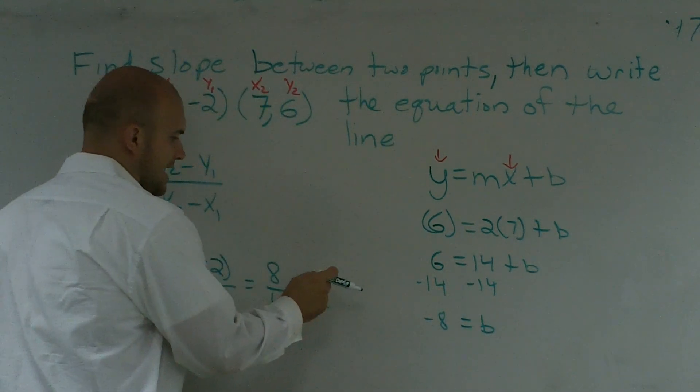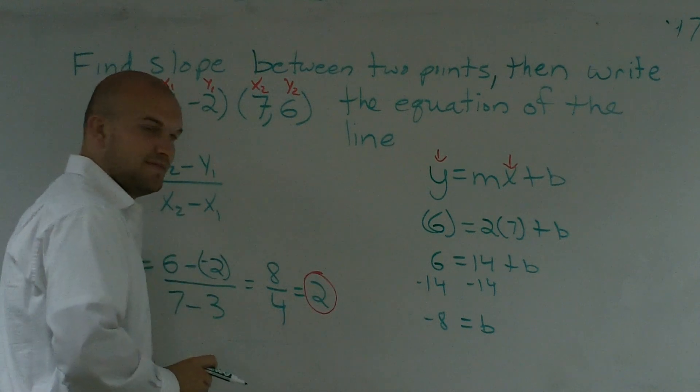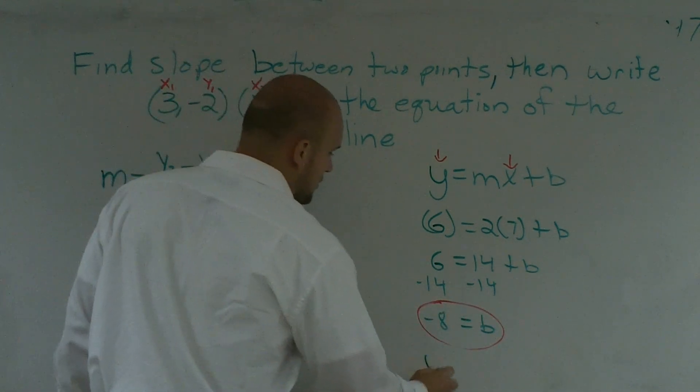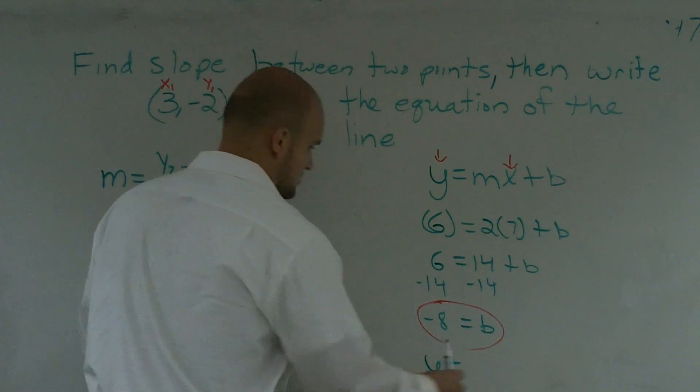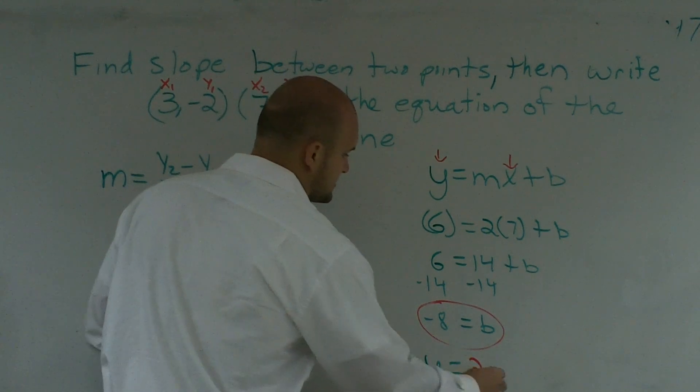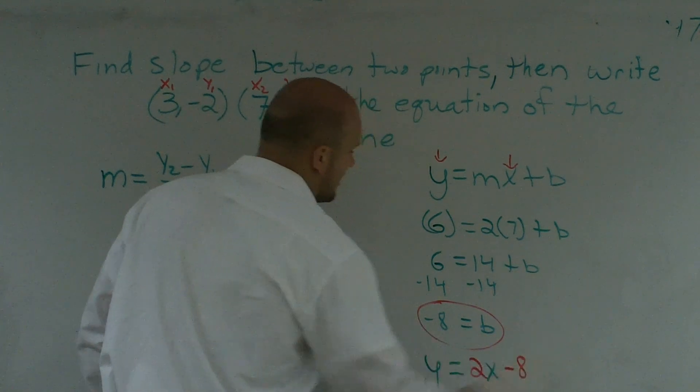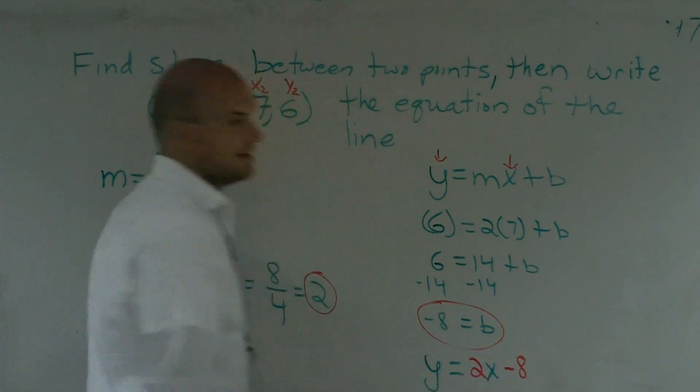So now, if you guys look at, I have just solved for an x in the previous problem, and now I've solved for my b. So when I write out my equation, y equals 2x minus 8, I now have an equation of a line.